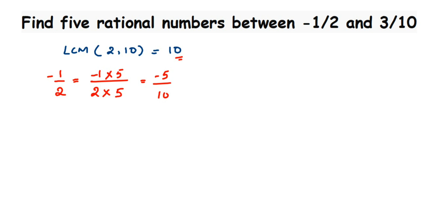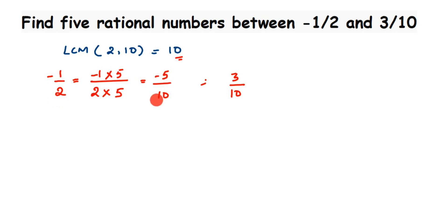For the second number, 3/10, the denominator is already 10, so we don't need to make any changes. Remember, -5/10 is equivalent to -1/2 — if you cancel 5 from -5/10 you get back -1/2. So instead of -1/2 we will use -5/10.